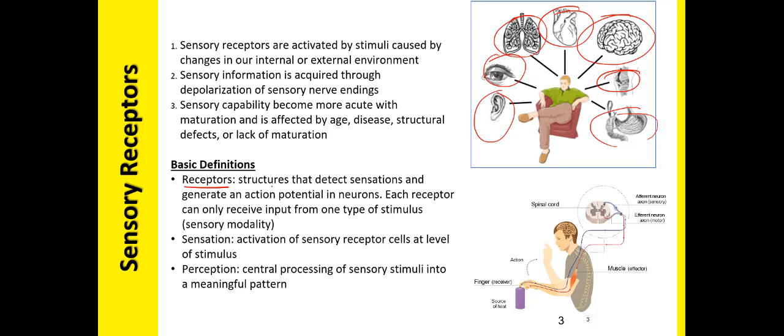Each receptor can only receive input from one type of stimulus — one sensory modality. For example, our ear can only detect sound, not sight, taste, or anything else. What comes into our eyes has nothing to do with what we taste, smell, or hear. That is a sensory modality.